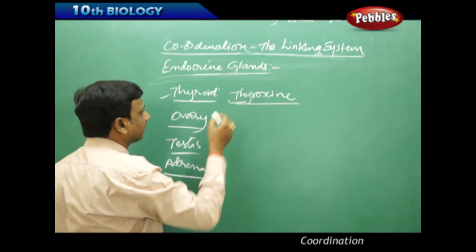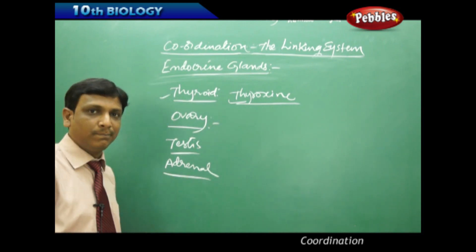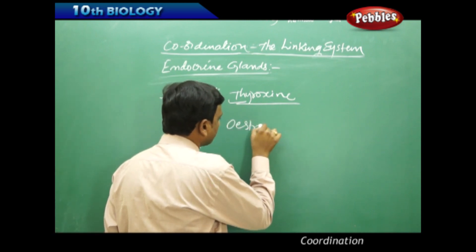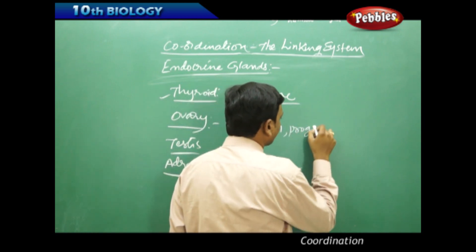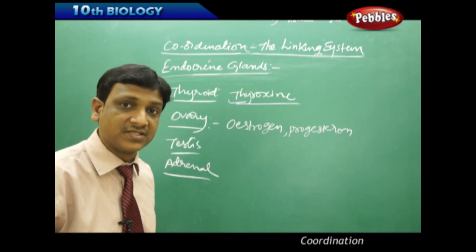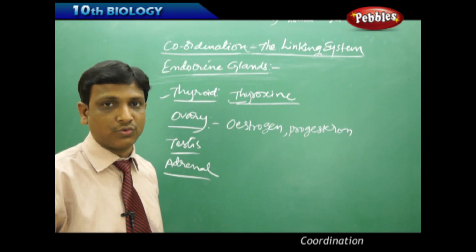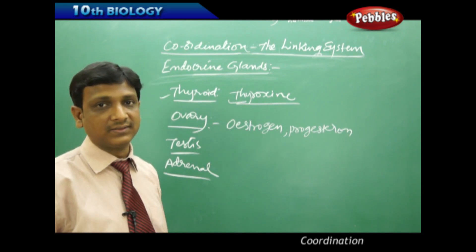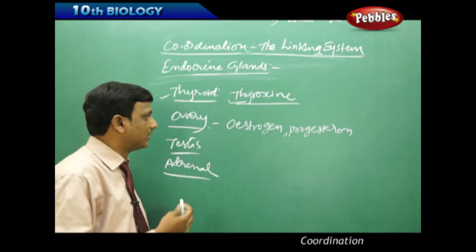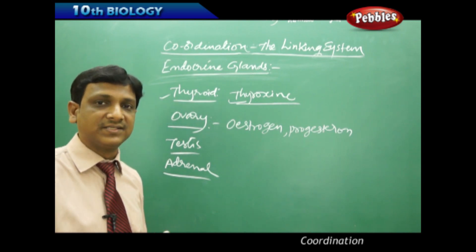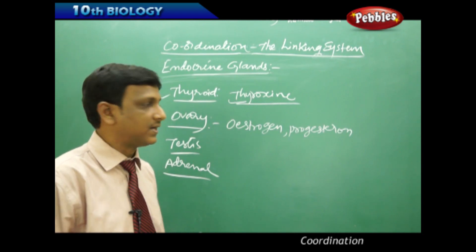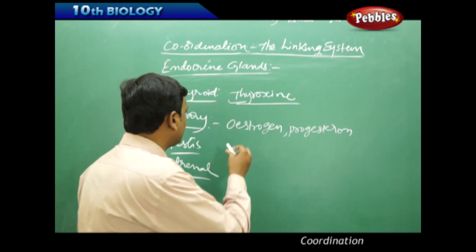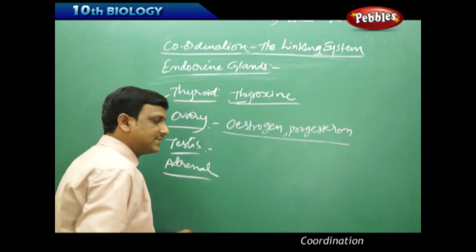The ovary is a reproductive organ in females, but at the same time it acts as an endocrine gland. The ovary secretes two hormones: estrogen and progesterone. These two hormones help in the development of secondary sexual characters in females, help in ovulation and pregnancy, and also help in the production of milk to nourish babies. A 28-day menstrual cycle is maintained because of these hormones, and they also help in the development of the pelvic part of the skeleton in females.